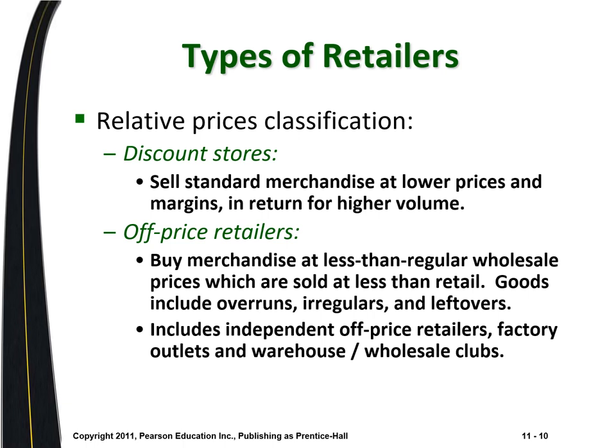The most common off-price retailers are stores like Marshalls, HomeGoods, TJ Maxx, and AJ Wright, which buy narrower clothing and home goods lines and sell them at a discount. There's less organization and no fixed inventory — while they have departments, it's never very clear what they have in stock at any given time. Compare this to Kohl's, which has very defined sections and patterned clothing for different seasons — though it also has a clearance section.